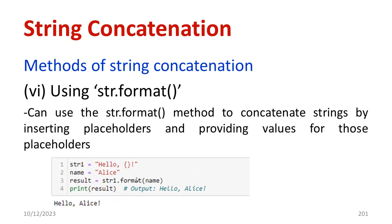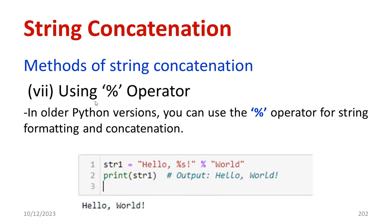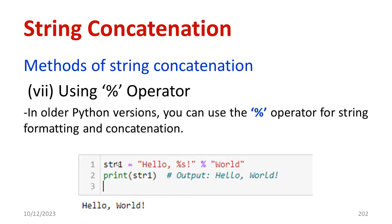We also have another option called str.format. The syntax is: define str1 with a placeholder like '{name}', then use str1.format(name='Alice'). The output will be 'Hello Alice'. Using the percentage operator, you can also perform string concatenation. For example, str1 equals 'hello %s', and you use the percentage operator with 'world'. When you print str1, you get 'hello world'. Using the percentage operator, string concatenation is performed.